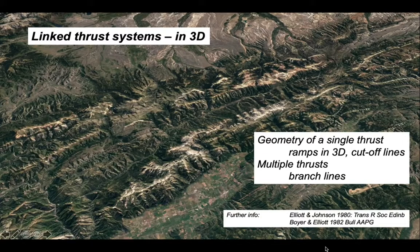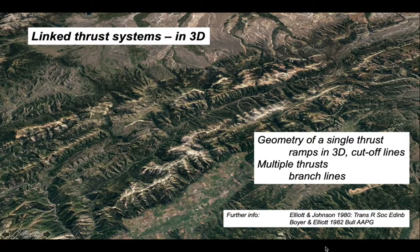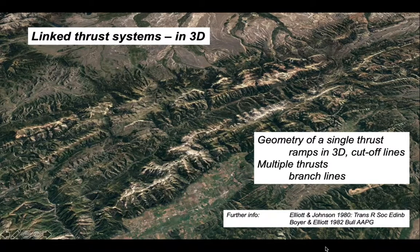That's a brief look at the geometry of linked thrust systems in three dimensions. We've looked at the geometry of single thrusts and multiple thrusts. In practice, constructing branch lines and cutoff lines requires good maps ideally assisted with well data, and the ability to draw serial cross sections to identify their positions and join up geometry. If you do that you can get a working understanding of the three dimensional structure of thrust systems.